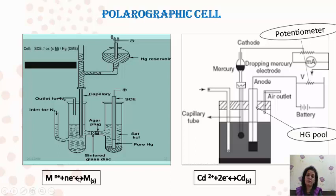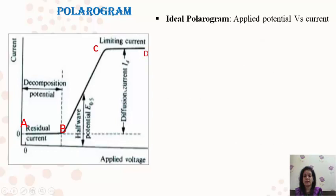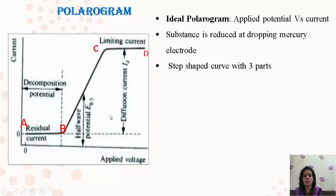When a metal like cadmium reduces and develops a current, you obtain a typical polarogram. This polarogram is obtained when you change the potential under a predetermined potential range and measure the resulting current for a particular metal ion solution. This polarogram can be bifurcated into three different areas, which I have shown here as the ideal polarogram illustrating the current-voltage relationship in three steps.